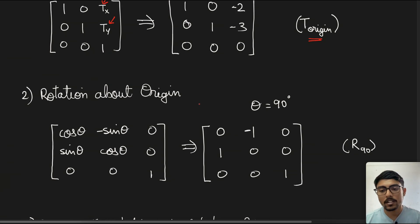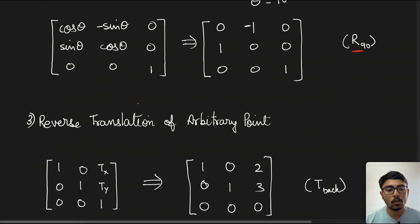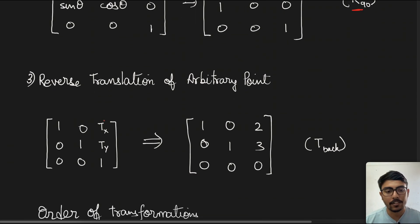Next, we want to perform the reverse translation which we did in step 1. Again, the translation matrix comes into play. This time we put (0,0) to (2,3). So here it is positive 2 and positive 3, and this is denoted by T_back.